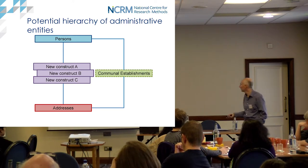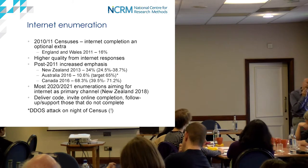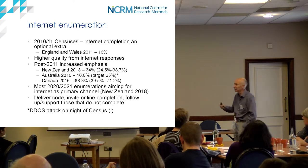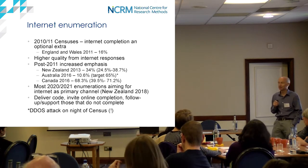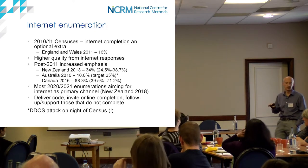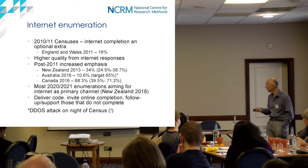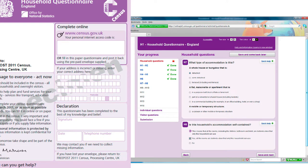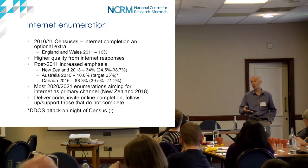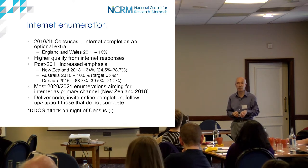You cannot derive sophisticated understandings of something like living arrangements by linking admin records - you'll end up with something, but it will be something different. This is back to what James and Laura were saying about understanding the purpose for which something was collected versus the purpose for which you want it. We may end up with a whole stack of constructs for ways people live together - you can trace some mother-child connections from admin data, some connections through DWP benefits data, but it won't get every household.